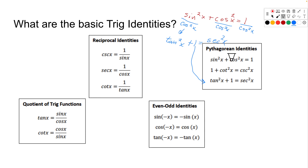You don't necessarily need to memorize the last two Pythagorean identities — you can derive them by dividing the first by cosine squared or sine squared. For the final exam we do provide a formula sheet, so I'll find out exactly what's included so you know which formulas you need to remember and which will be given to you.